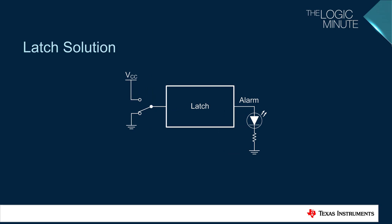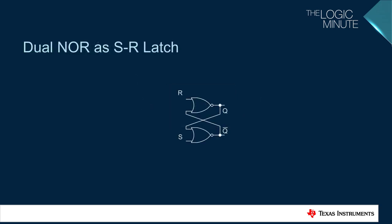With the alarm trigger being fed into a latch, you are still able to see the trigger event happen at the output of the latch, but now the signal at the output of the latch stays high even when the alarm trigger disappears. A latch can be simply made by connecting two NOR gates together in this configuration to form an SR latch.